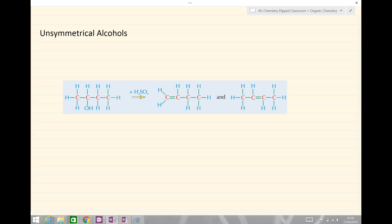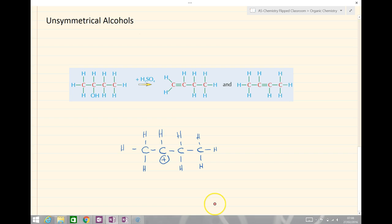Unsymmetrical alcohols, such as our example here where we have butane-2-ol, can result in the formation of two different organic products. And that's because, as we form the carbocation intermediate, which I'm just going to draw here, the carbon adjacent are different.